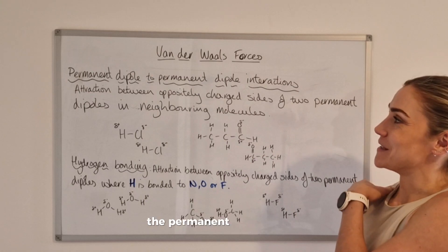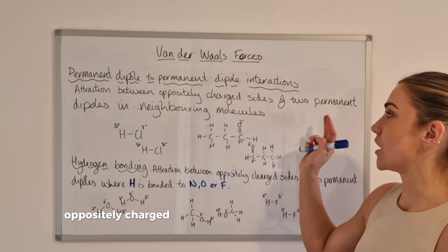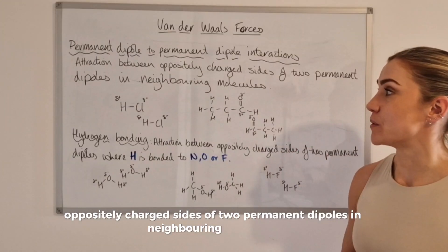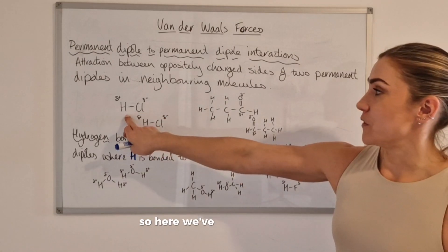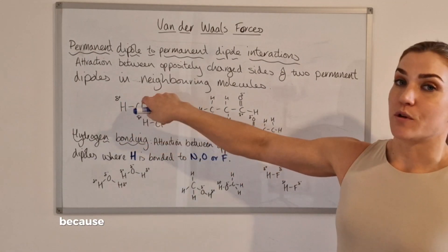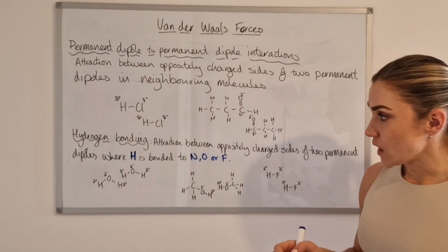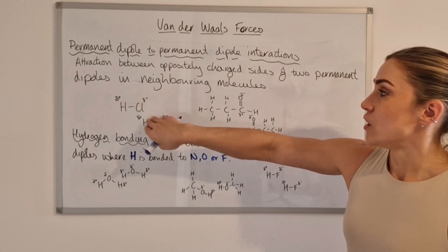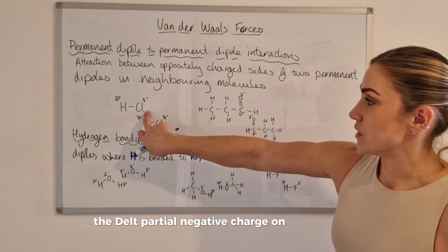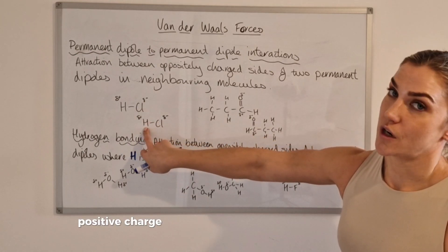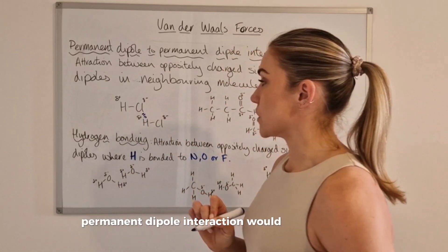The permanent dipole to permanent dipole interaction is just an attraction that occurs between two oppositely charged sides of two permanent dipoles in neighbouring molecules. Here we've got a molecule that has a permanent dipole because chlorine is more electronegative than hydrogen — you can look that up on page 12 in the data book. When you've got two hydrogen chloride molecules next to each other, the partial negative charge on one side attracts the partial positive charge on the other molecule, giving a permanent dipole to permanent dipole interaction.